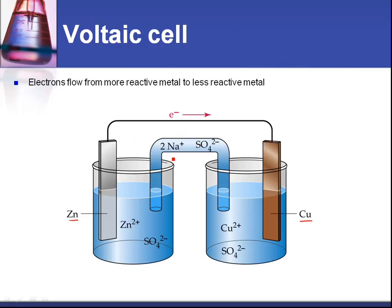Now, a voltaic cell is made of two half cells. You have one half cell here, the zinc half cell on the left, and the copper half cell on the right. And what we have is we have two electrodes. And we're going to name those the cathode and the anode.